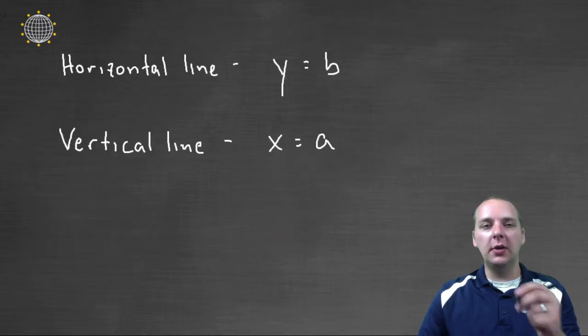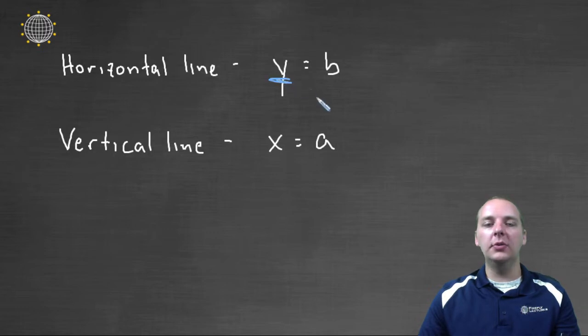So just remember, just try to commit this to memory. Horizontal lines are y equals a constant. Vertical lines are x equals a constant. And just be aware, a lot of students struggle with this. They easily confuse horizontal lines with x equals and vertical lines with y equals. So just make sure you keep it straight that a horizontal line is y equals a constant, and a vertical line is x equals a constant.